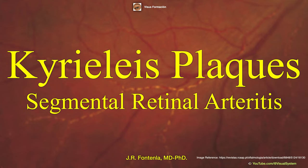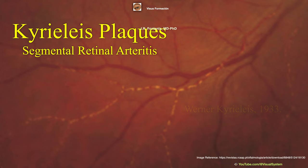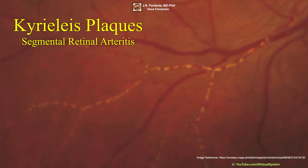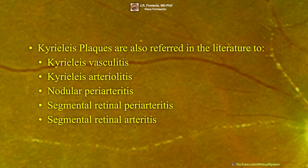Kyrieleis plaques represent focal segmental retinal arteritis or periarteritis, usually associated with infectious posterior uveitis or non-infectious autoimmune vasculitis. They were first described by Werner Kyrieleis in 1933 as ring-like exudates extending along the width of arteries, particularly at vessel branching points — whitish-yellow glistening deposits along the outer walls of retinal arterioles with high reflectivity, without venous involvement. The most suggested name in the literature is 'segmental retinal arteritis.'